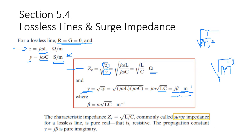We call it surge impedance for lines of pure real resistance. Because now the surge impedance becomes a real number in ohms — it's not a complex number. Because we are dividing imaginary part over imaginary part, which gives you a pure real number. The propagation constant is the imaginary part — it's a pure imaginary, J beta, per meter. So this is J beta, a pure imaginary, as the propagation constant.